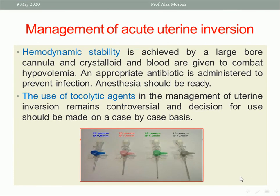To manage acute uterine inversion: first, resuscitate the patient — give crystalloids, blood transfusion, insert two wide-bore cannulae, give proper antibiotics to avoid infection, call for help, and call for anesthesia. Then you want the uterus to be relaxed so you can reinsert it into the abdomen. There is controversy about tocolytic drugs: some advise magnesium sulfate, some advise beta-mimetics, but the best is terbutaline. If general anesthesia is given, it itself is a muscle relaxant, so other tocolytics may not be needed — use them on a case-by-case basis.